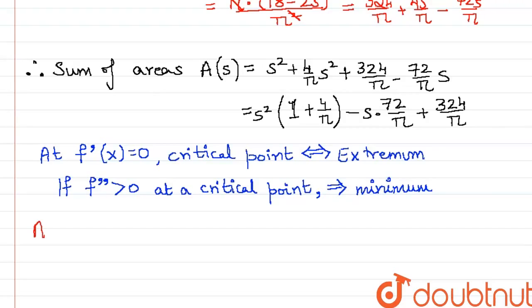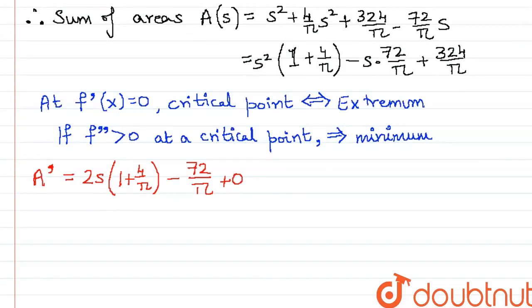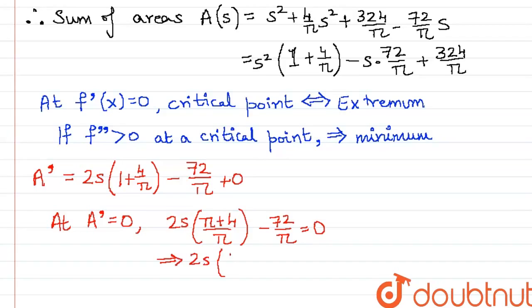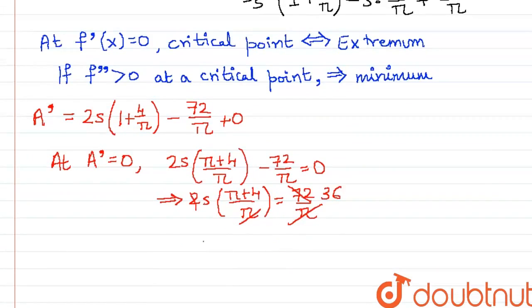Keeping this in mind, let us take the first derivative of A which will be 2s times (1 plus 4/π) minus 72/π plus zero. Equating this to zero we get 2s times (π plus 4)/π minus 72/π equals zero. Taking 72/π on the other side, we can cancel a π and a 2, and we get that s equals 36/(π plus 4).